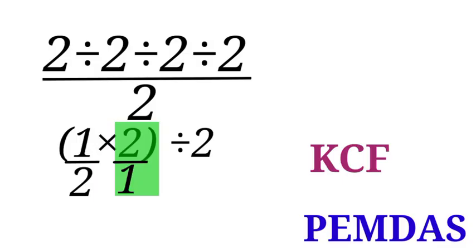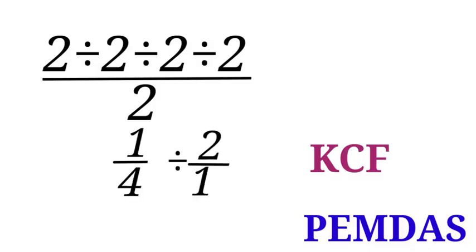We take one to the numerator and bring two to the denominator, giving us one over two times one over two, inside the parentheses, divided by two. One times one is one and two times two is four, so we now have one over four divided by two over one. Two over one is the same as two.